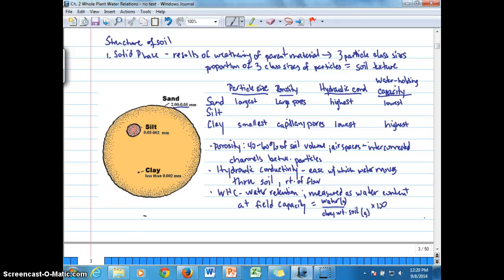Okay, so we've looked at the solid phase in terms of the particle size classes that result from weathering of the parent material and how particle size class affects movement of water through the soil. Other aspects of the solid phase include the organic matter in the soil, which we'll abbreviate OM, such as humus. We already talked about humus earlier.